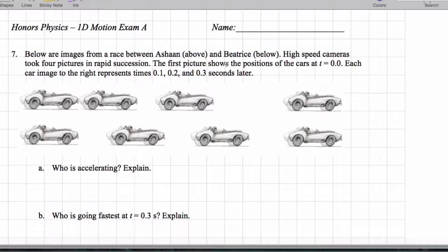So we get the high-speed camera. So here we are at 0.0, 0.1, 0.2, and 0.3 seconds. So clearly, if this is Ashan and this is Beatrice,